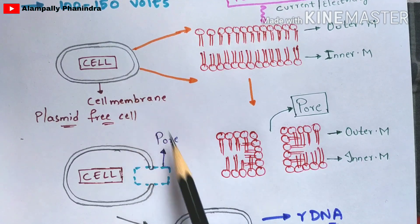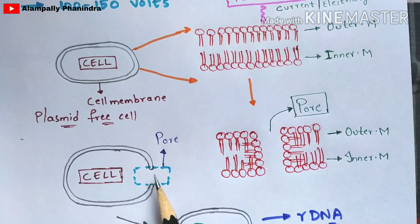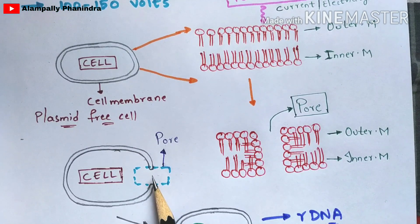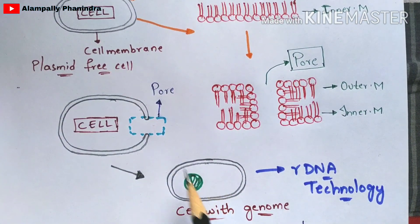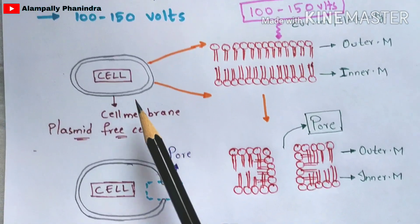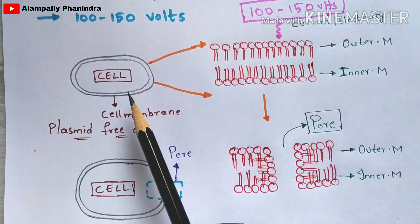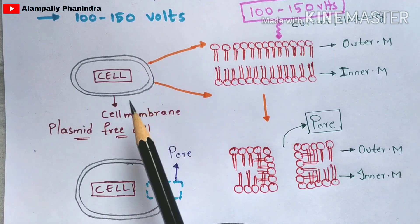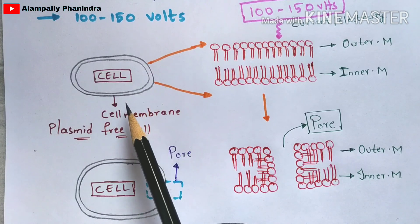Once the electric current of 100 to 150 volts is applied, the cell membrane forms a pore — an opening to the cell. Now the cell is unprotected because the cell membrane has been opened. We are going to inject DNA into this cell. At the first step, we select a cell that doesn't consist of any nucleus or genome — a plasmid-free cell.